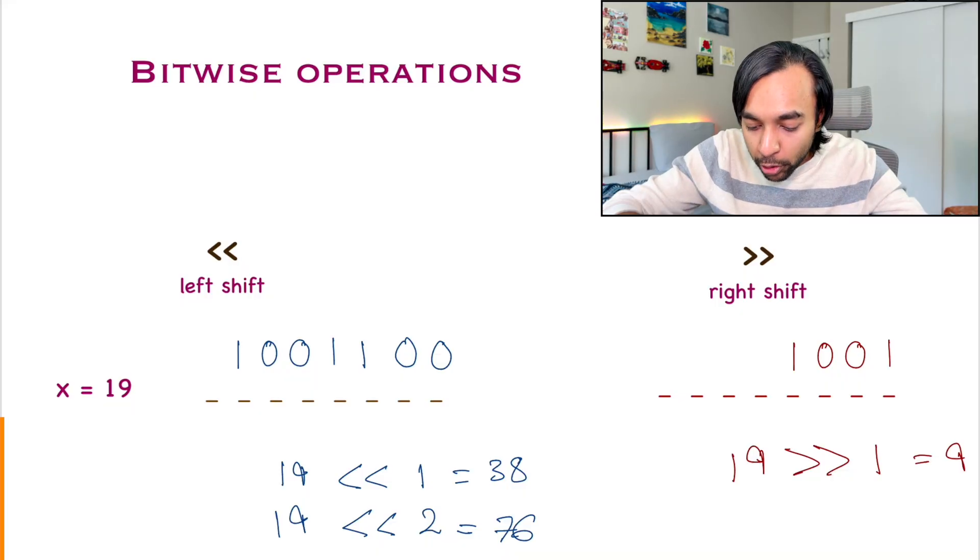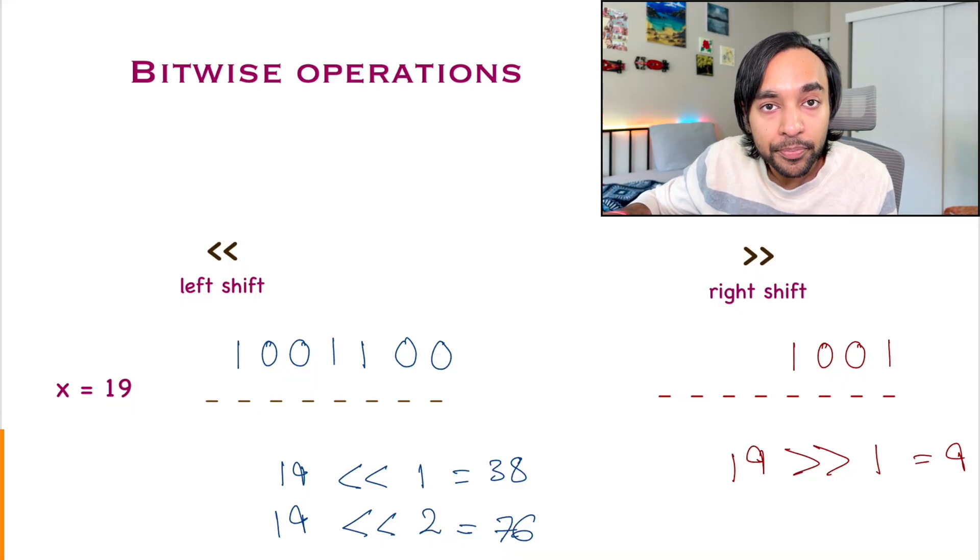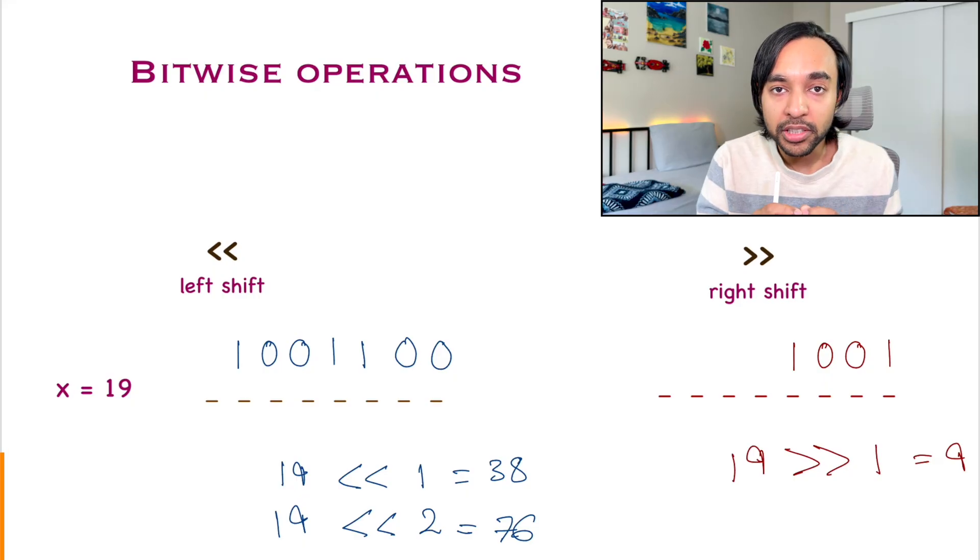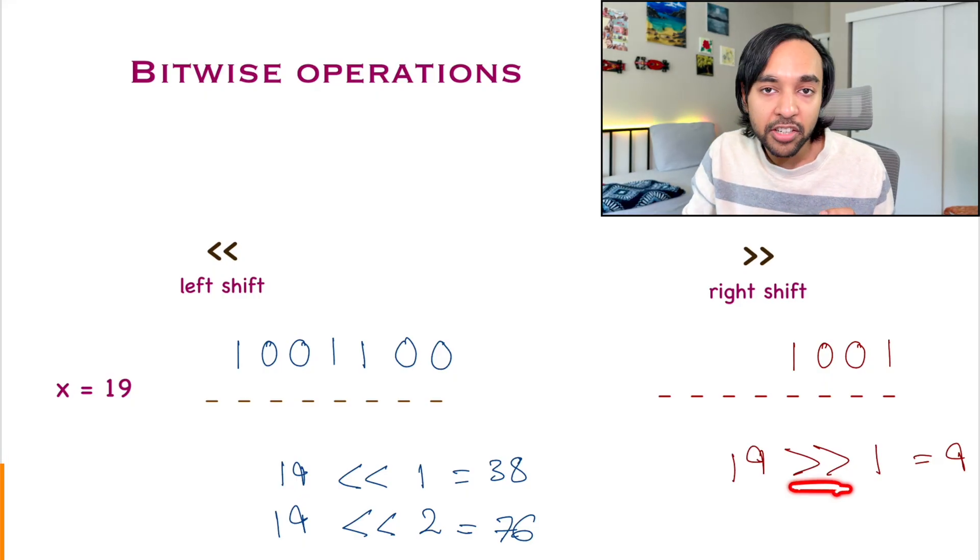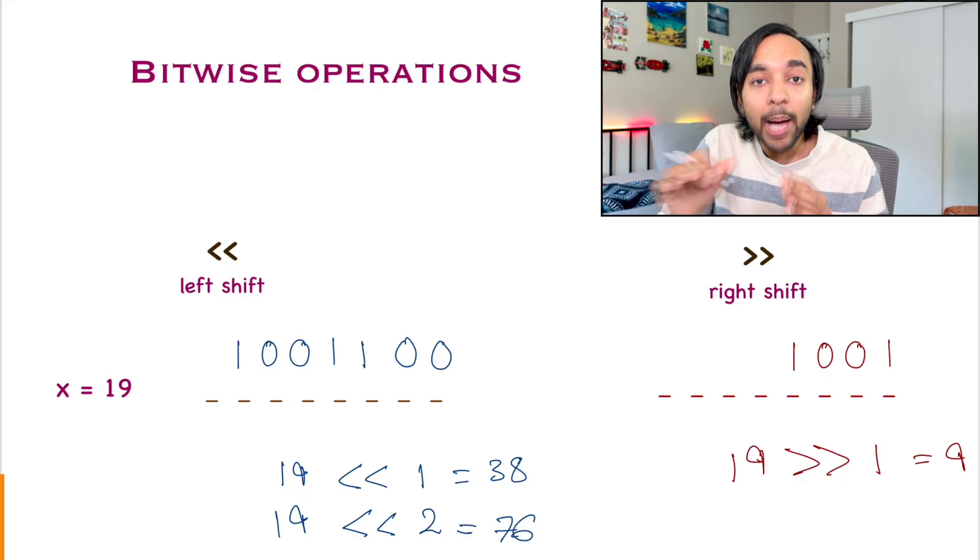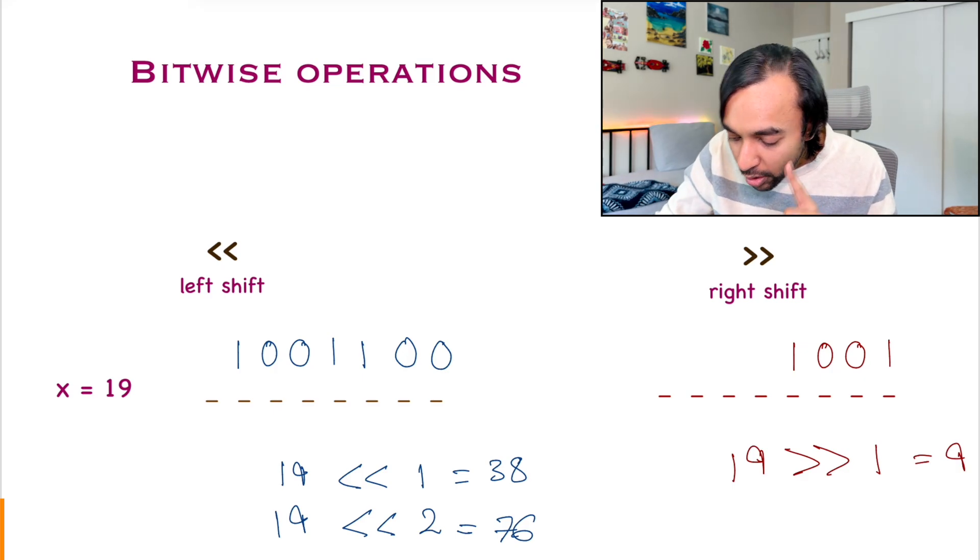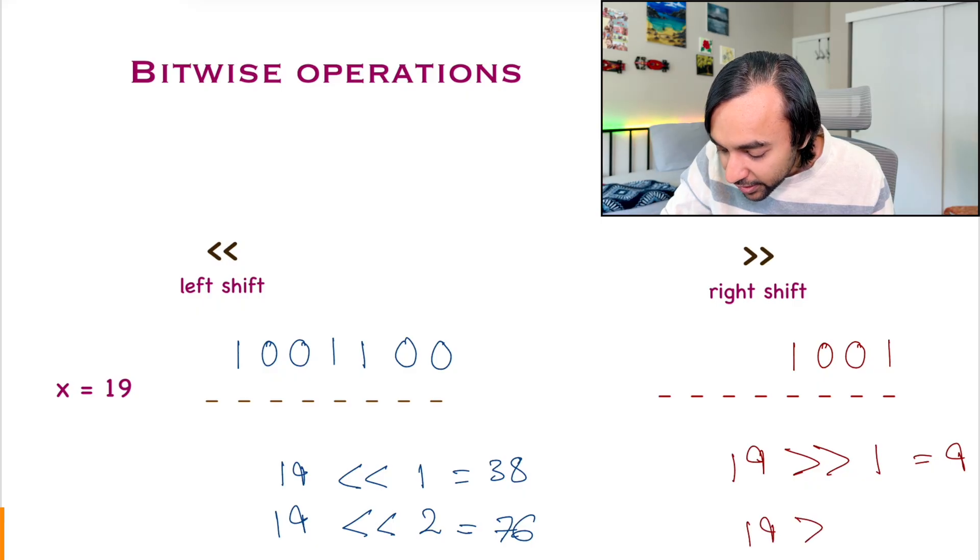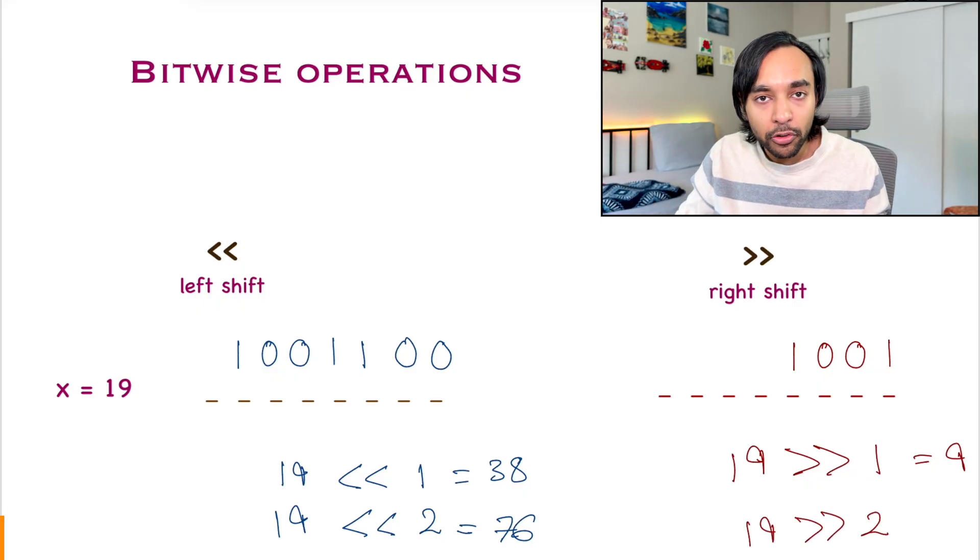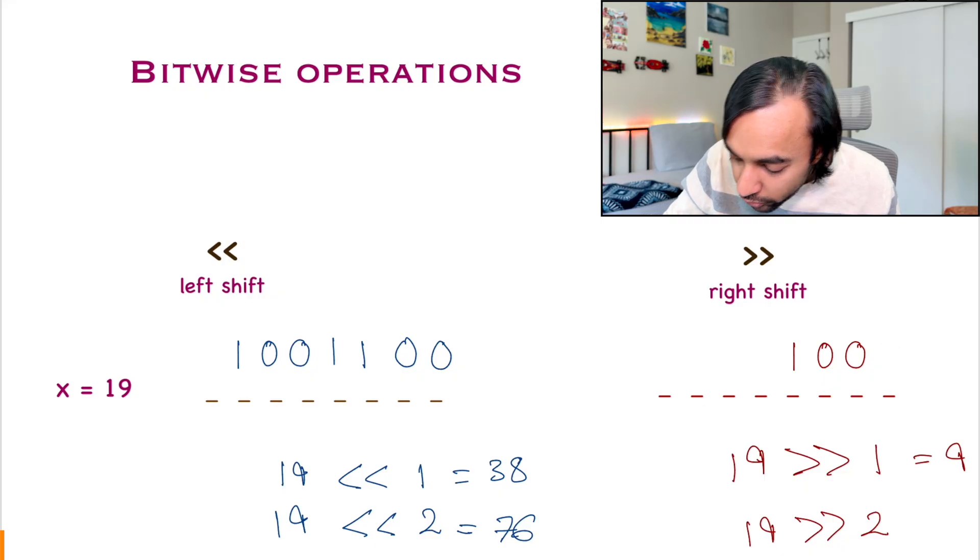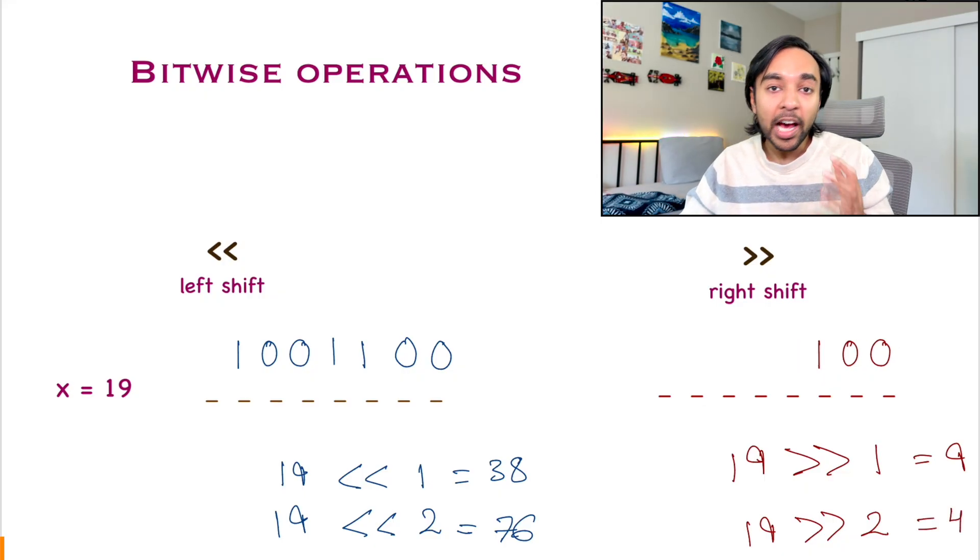So, if you want to do all of it on your own, then it is a very lengthy process. But with computers, when you do this right shift operator, all of this happens in memory. And it is very, very fast. Now, instead of a 1 shift, if I had done something like this, 19 with a right shift of 2, then what would have happened? One more number would have fallen off and the result would have been 4.